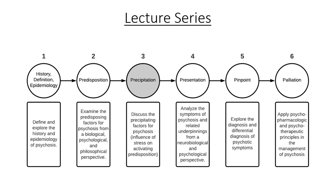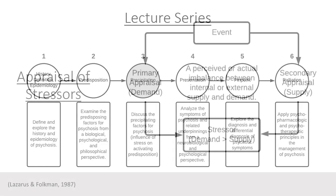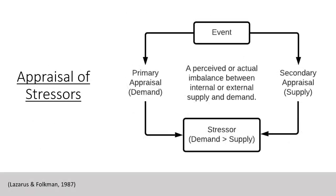Stress is a perceived or actual imbalance between internal or external supply and demand. Supply refers to internal and external resources, some of which include level of resilience, coping skills, material assets, and social support, among other things.